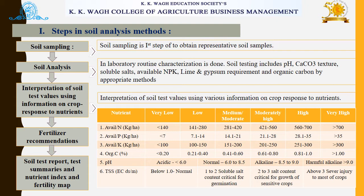Now we will see the different steps in soil analysis methods. The first step is soil sampling, which is done to obtain a representative soil sample. Soil analysis is then conducted in the laboratory with routine characterization. Soil testing includes pH, calcium carbonate, texture, soluble salts, available nitrogen, phosphorus, and potassium. We can also analyze the lime and gypsum requirements of a particular soil, or organic carbon, by appropriate methods.